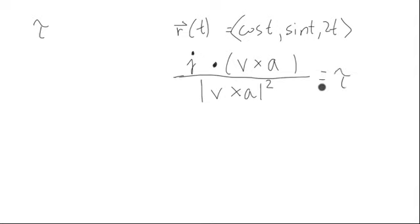So let's work through that. Let's take our different derivatives here of R. So first we have cosine T, sine T, 2T, and just take derivatives. Next derivative is negative sine T, cosine T, two.